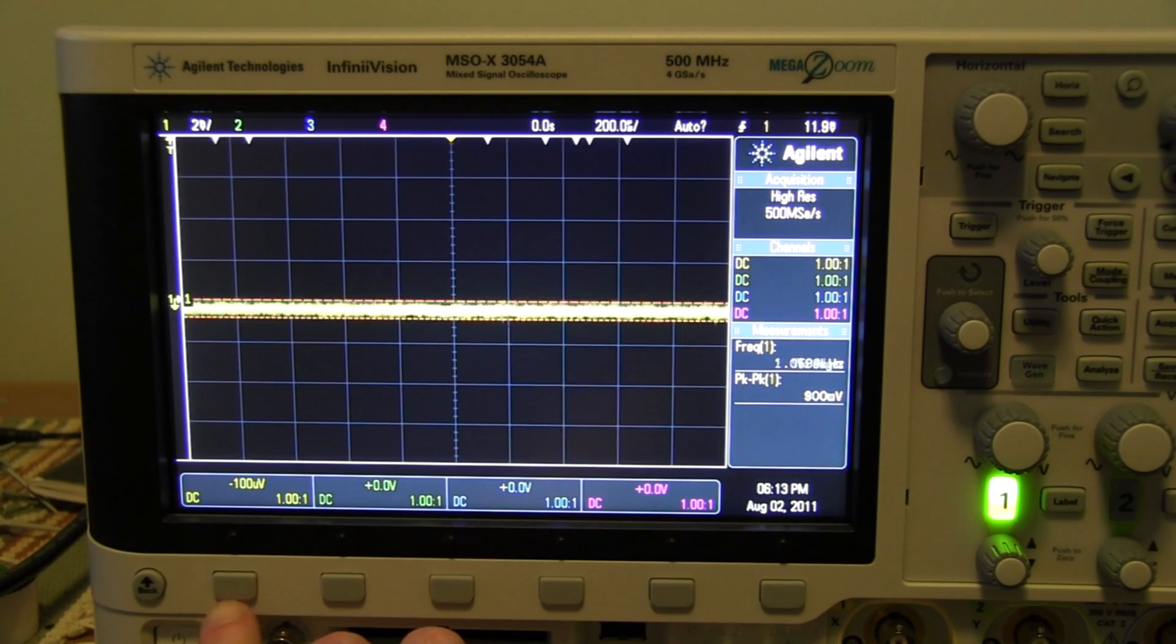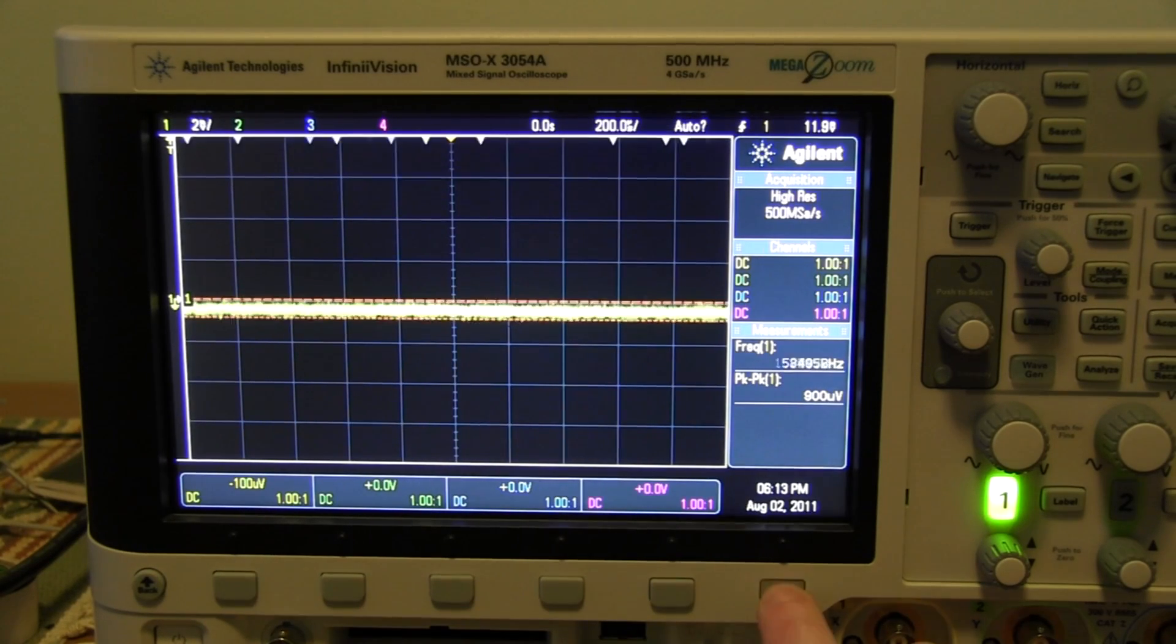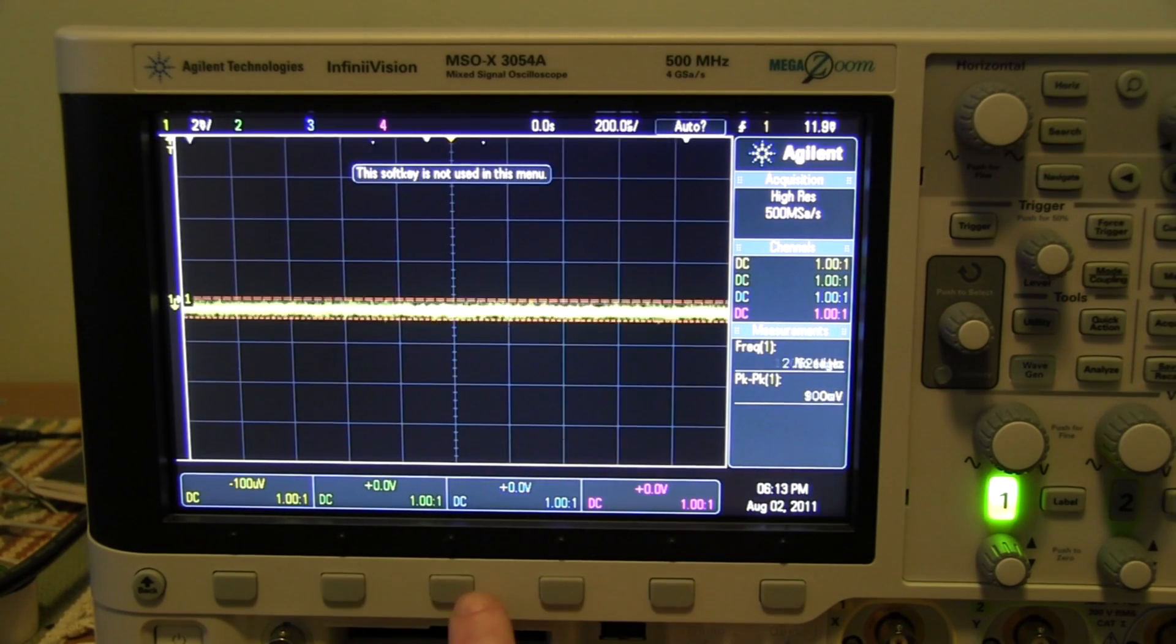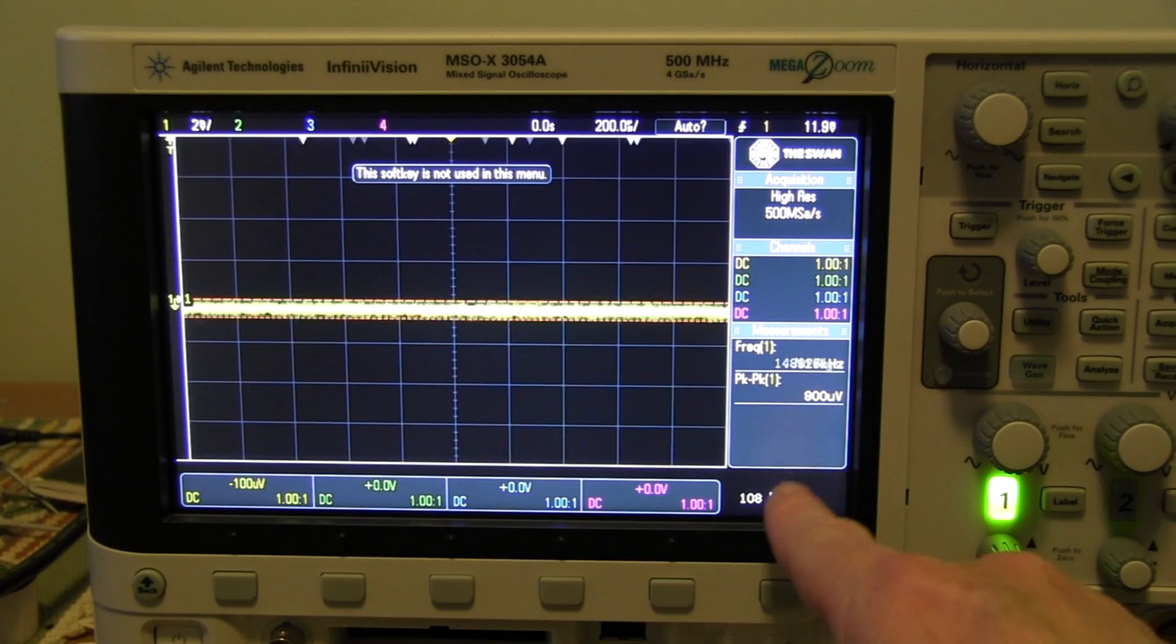If you number the soft keys from 1 here to 6 over here, then you enter those in sequence, and bingo, you get the Easter egg. So let's try it: 16, 23, 42. Bingo, there it is.